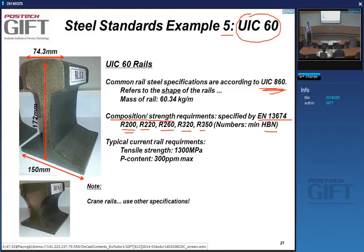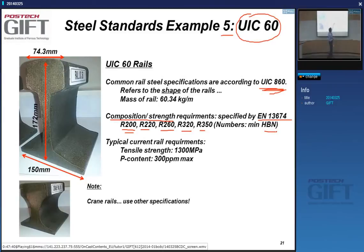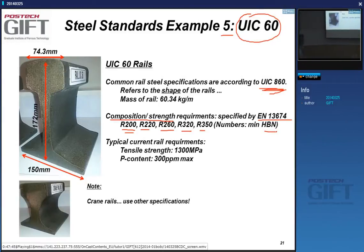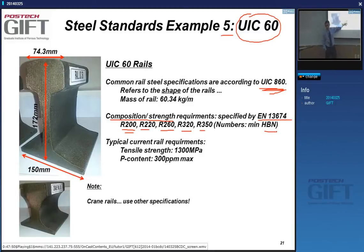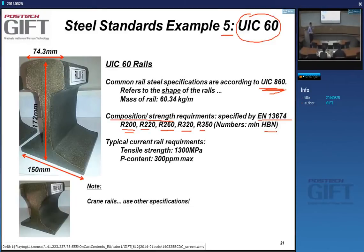Typical tensile strengths of rails are around 1300 MPa — very hard material. Depending on the application there are other specifications — crane rails are different and have different specifications. The rail steel example shows that because of the application, what's important in a grade specification can vary widely.